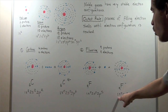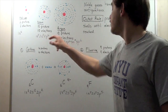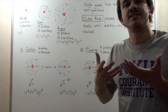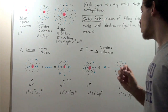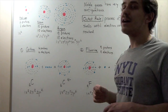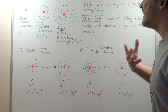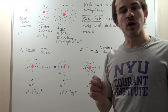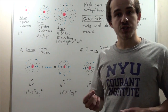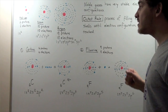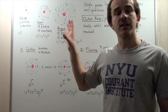Once it gains that electron, fluorine has two electrons in the 1s, two in the 2s, and six in the 2p — an electron configuration that matches that of Neon. It's very stable because noble gases have very stable electron configurations. That's basically what the Octet Rule is: a process that gives you a noble gas electron configuration. Atoms such as nitrogen, carbon, fluorine, and other halogens are able to undergo the Octet Rule and gain electrons to form this perfect noble gas electron configuration.